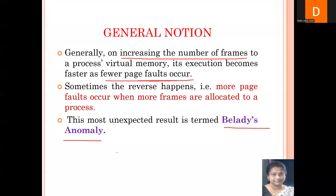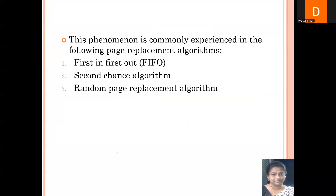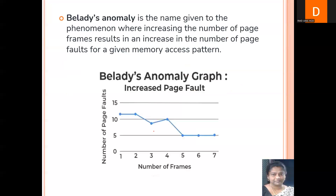This unexpected result is termed Bélády's Anomaly. This phenomenon is exhibited by three different algorithms: FIFO, the Second Chance algorithm, and the Random Page Replacement algorithm. These algorithms experience Bélády's Anomaly.